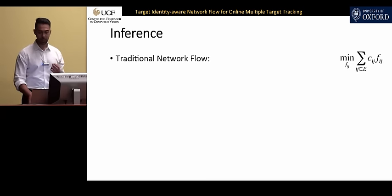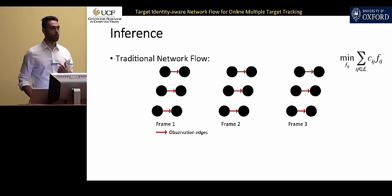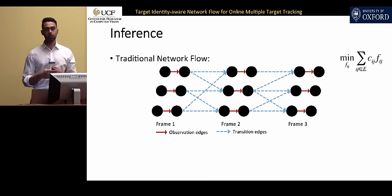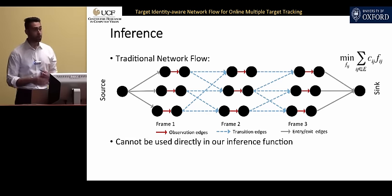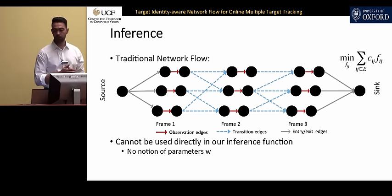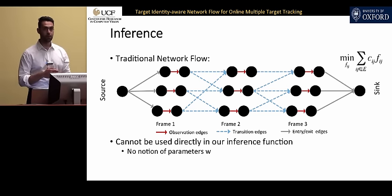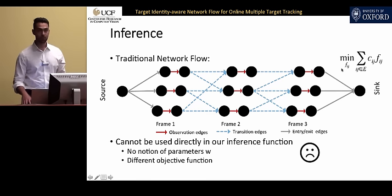Let's look at traditional network flow. The objective function is shown on the bottom right, and here is the network for three frames with three detections per frame. For every detection we consider a pair of nodes connected through observation edges, whose cost comes from pre-trained object detection confidence scores. Detections in consecutive frames are connected using transition edges capturing similarity, plus source and sink nodes. The problem is we cannot directly use this as our inference function because there is no notion of the parameter W in the objective function, and the objective function is different from our score function.